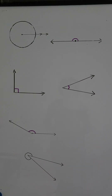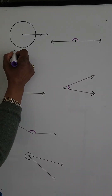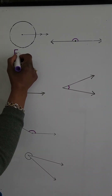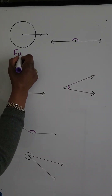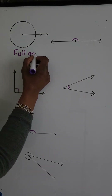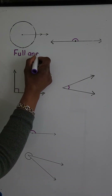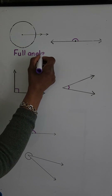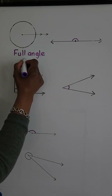Hi everyone, welcome to another video. Today we will do a brief tutorial on types of angles. First we have a full angle, and a full angle measures 360 degrees.